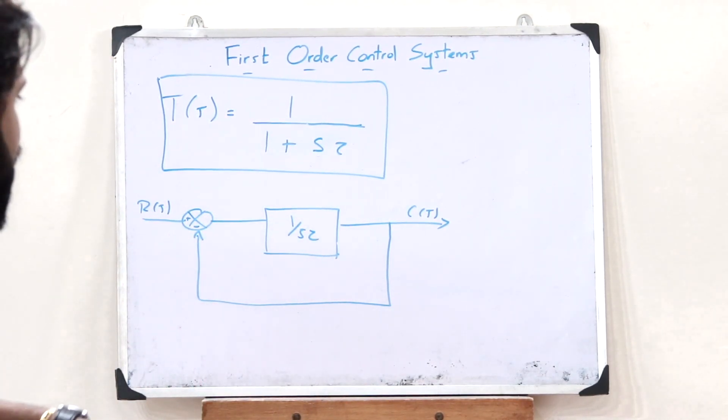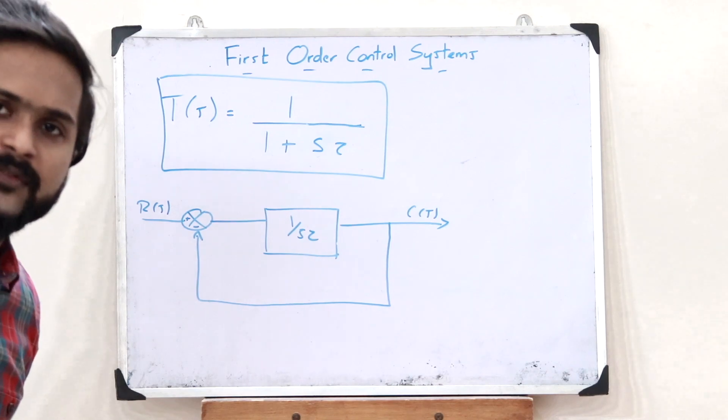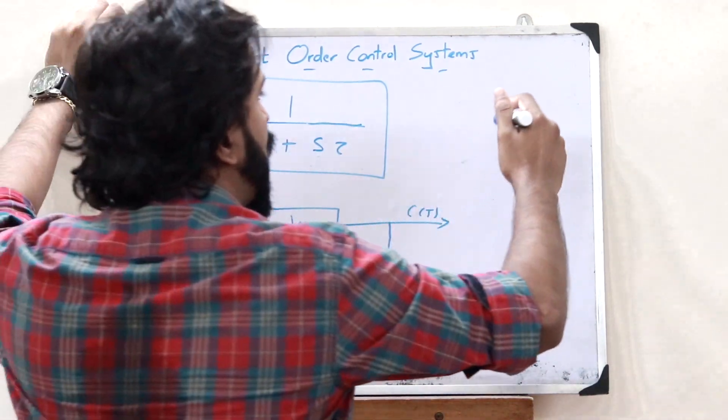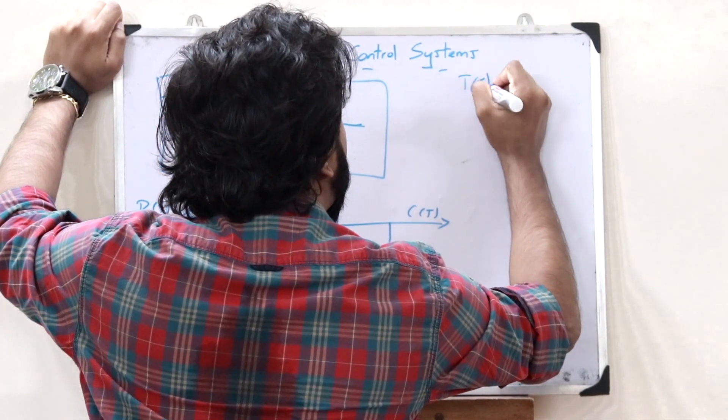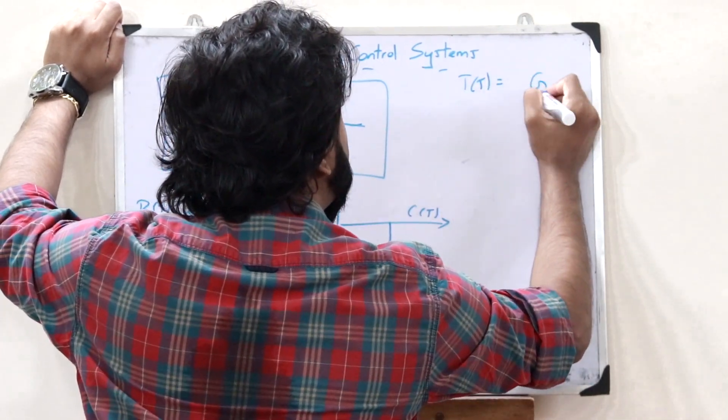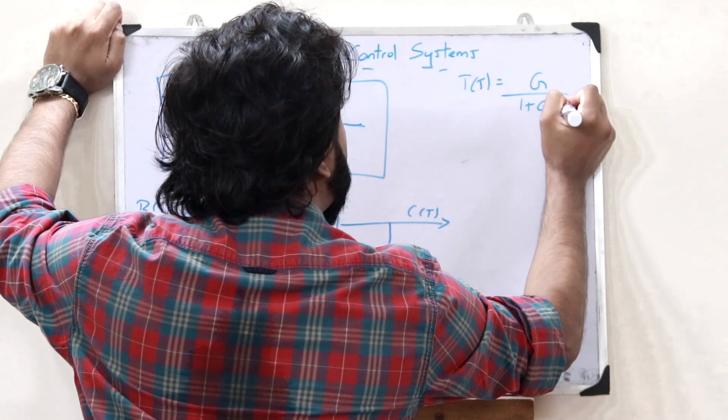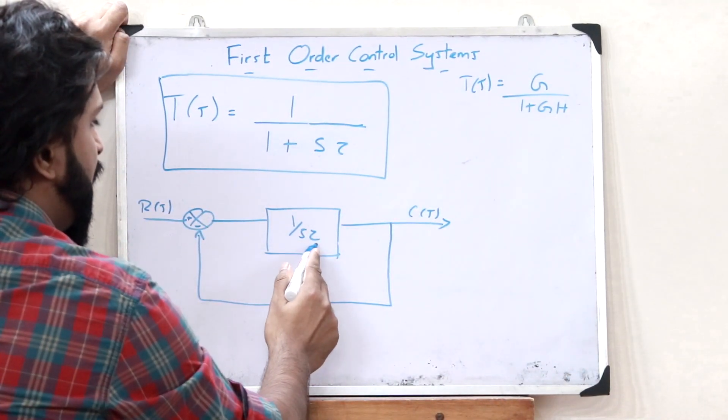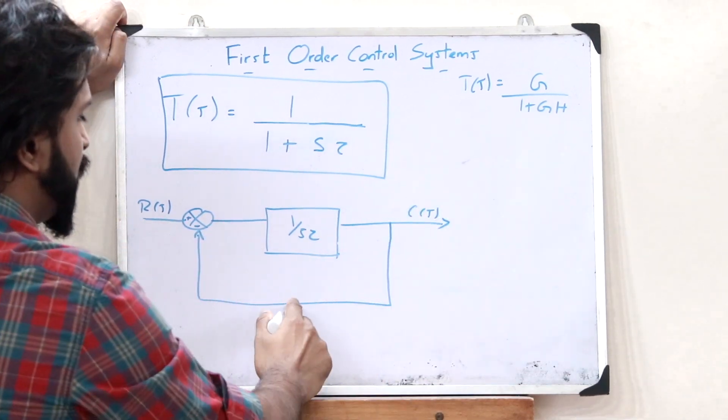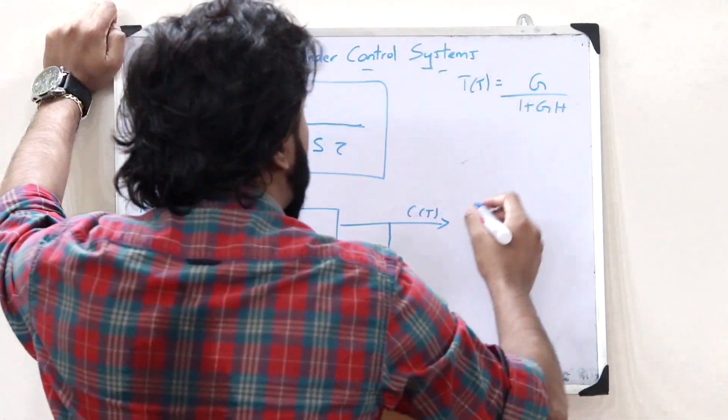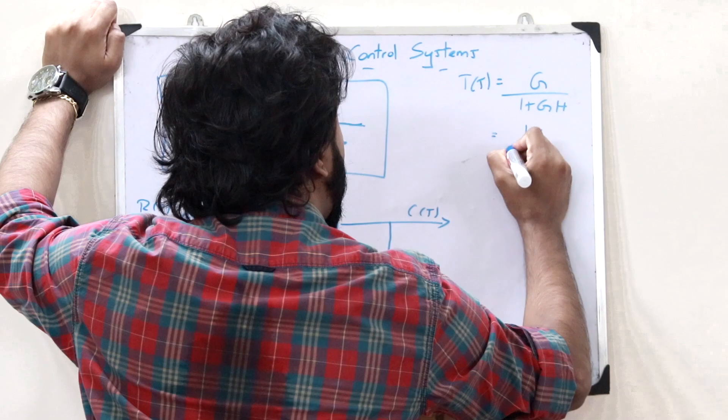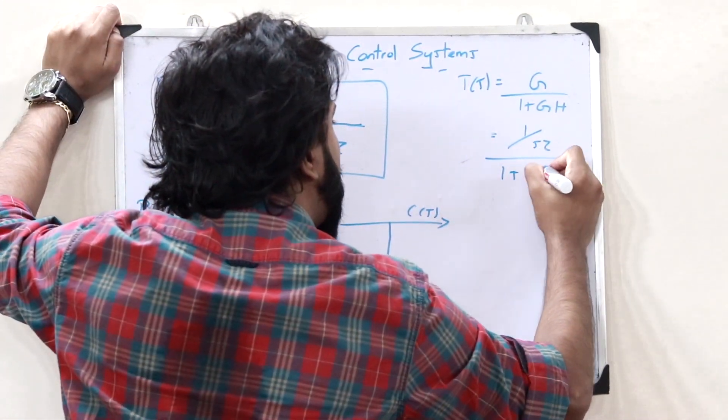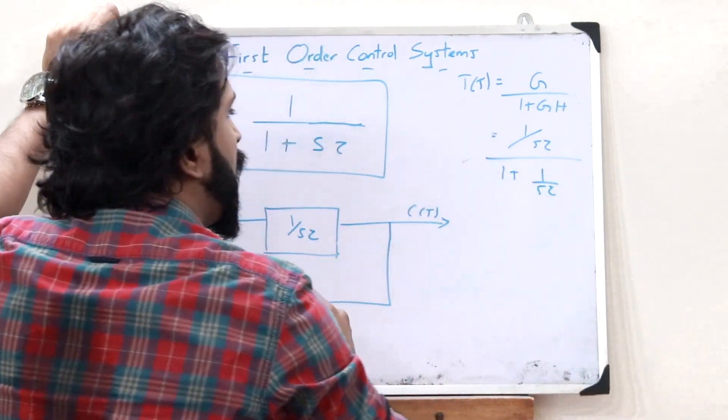Here, we know for a fact that whenever a negative feedback is provided and if the negative feedback gain is H, then the overall transfer function is given as T of S equals G divided by 1 plus G H. Here, the value of G is 1 by S tau and the value of H is 1. Therefore, this would become equal to 1 divided by S tau, divided by 1 plus 1 divided by S tau.